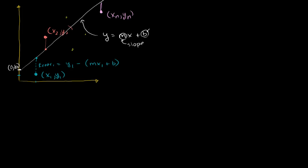That's the first error. We can keep doing it with all of the points. Error 2 is y₂ minus (mx₂ + b), where mx₂ + b is the value on the line at x₂. And we keep going all the way to our nth point — that error is yₙ minus (mxₙ + b).